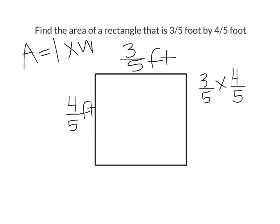So we would set up our problem as 3/5 times 4/5. We can check to see if we can simplify anything diagonally, which it doesn't look like we can for this. And so we're just going to multiply straight across. 3 times 4 equals 12. And 5 times 5 equals 25. So our answer would be 12/25 square feet.